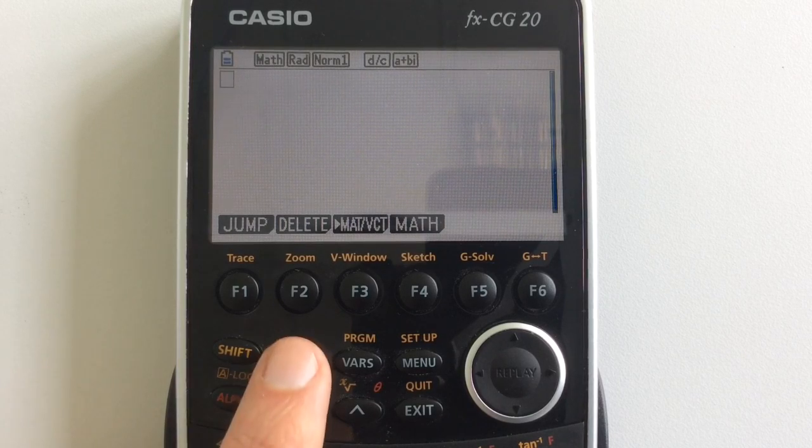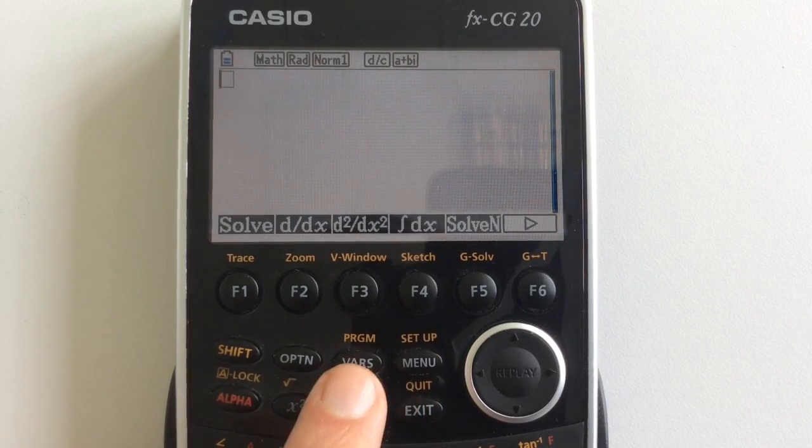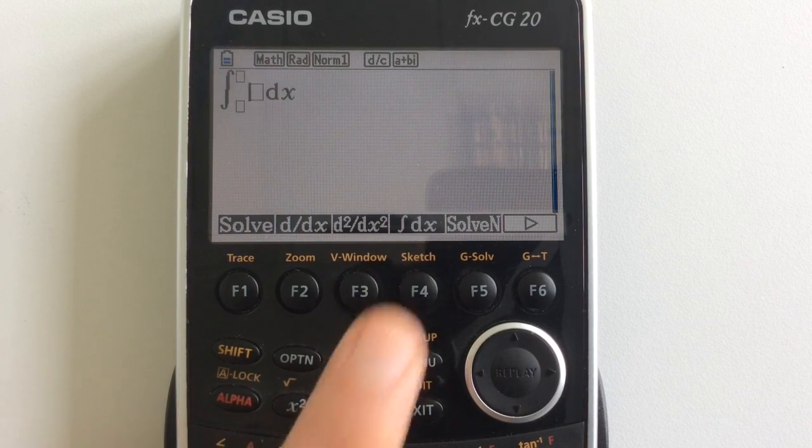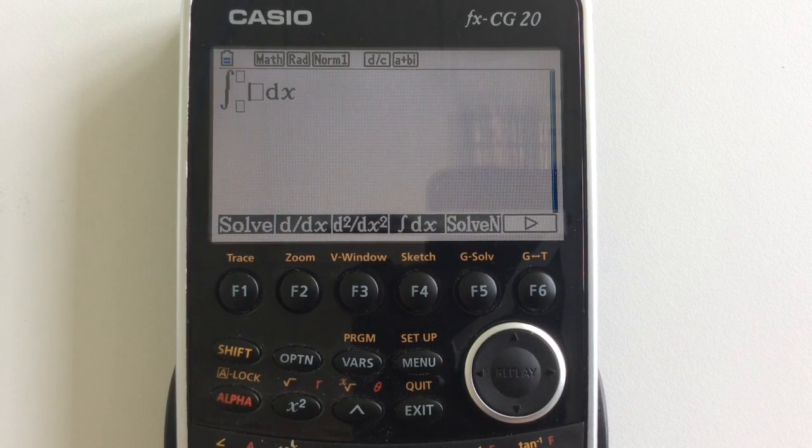Very simply, all we do is press options, then calculus, and we've got different options down here. This is the one we want to evaluate numerical integral. We can then type in whatever we might want.